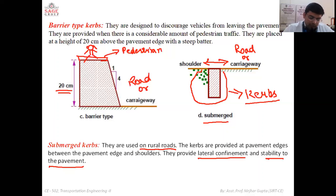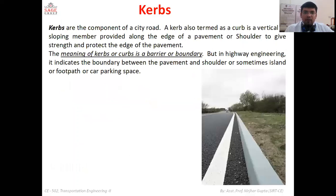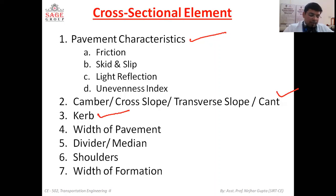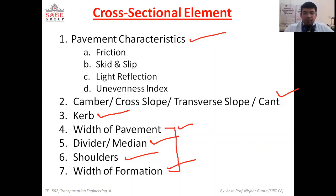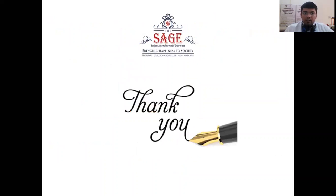So this was all about the different types of curbs. To summarize, we have discussed pavement characteristics, camber, and curbs as cross-sectional elements of the road. In the next lecture we will discuss the width of the pavement, dividers and medians, shoulders, and width of formation. Thank you all for patiently listening. I hope you have understood about camber and curbs.